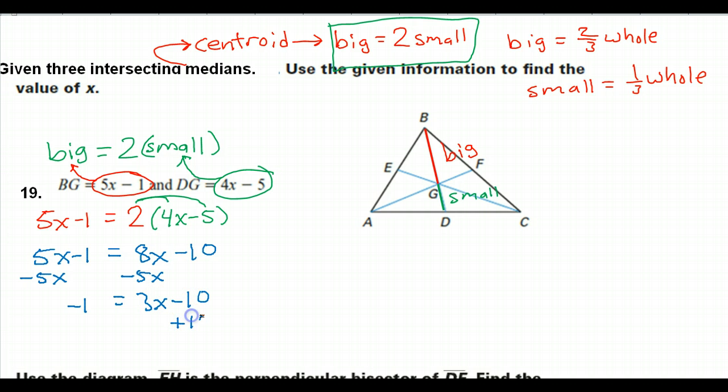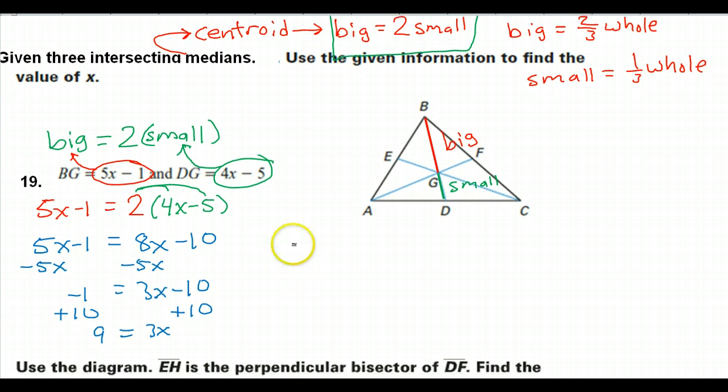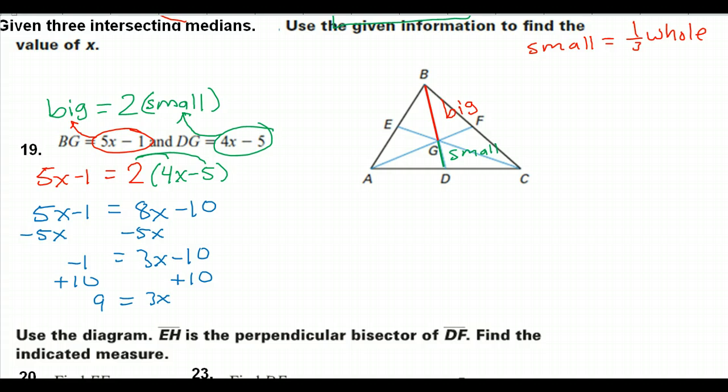Then I'm going to add 10 on both sides. So that's going to leave me with 3x equals 9. I'm going to divide both sides by 3, and that's going to give me 3 equals x, or x equals 3.